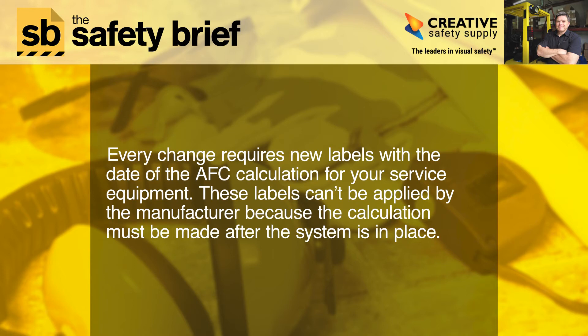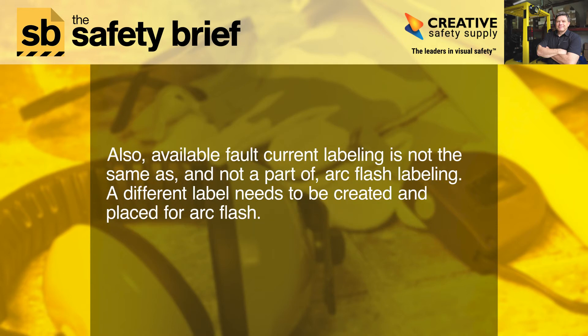Every change requires new labels with the date of the AFC calculation for your service equipment. These labels can't be applied by the manufacturer because the calculation must be made after the system is in place. Also, available fault current labeling is not the same as, and not a part of, arc flash labeling. A different label needs to be created and placed for arc flash.